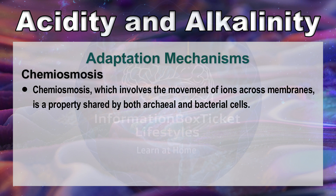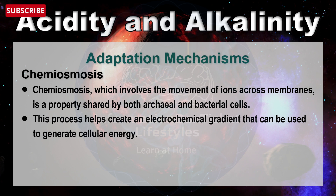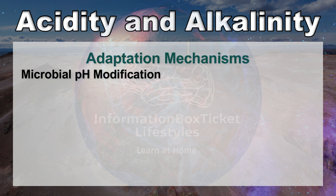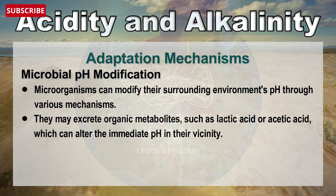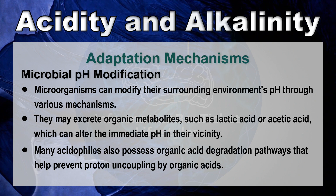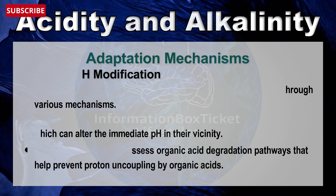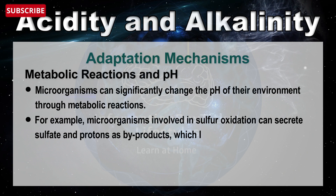Chemiosmosis — which involves the movement of ions across membranes — is a property shared by both archaeal and bacterial cells, helping create an electrochemical gradient used to generate cellular energy. Microorganisms can modify their surrounding environment's pH through various mechanisms; they may excrete organic metabolites such as lactic acid or acetic acid, which can alter the immediate pH in their vicinity. Many acidophiles also possess organic acid degradation pathways that help prevent proton uncoupling by organic acids.